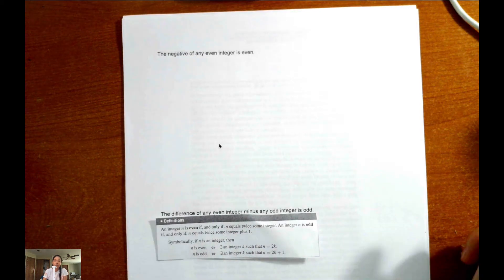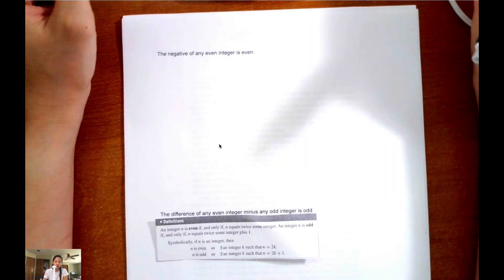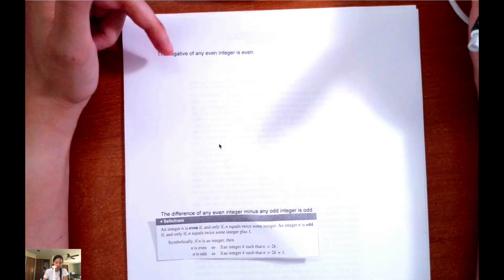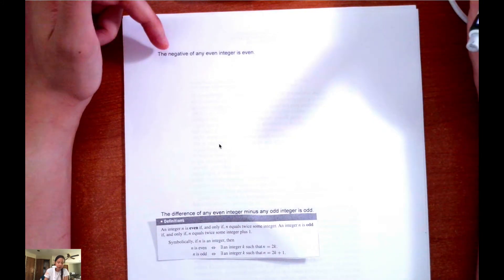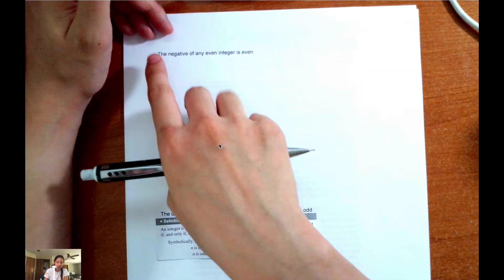Hey guys, in this video I'm going to be going over how to write the proof for this sentence. So the sentence says, the negative of any even integer is even.